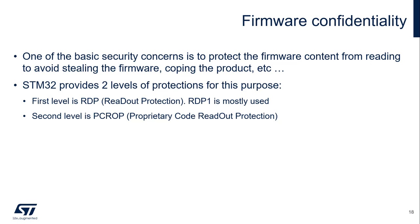STM32 provides two levels of protection for this purpose. The first level is RDP, readout protection. RDP level 1 is mostly used. The second level is PCROP, proprietary code readout protection. Here we are mainly talking about external attacks.